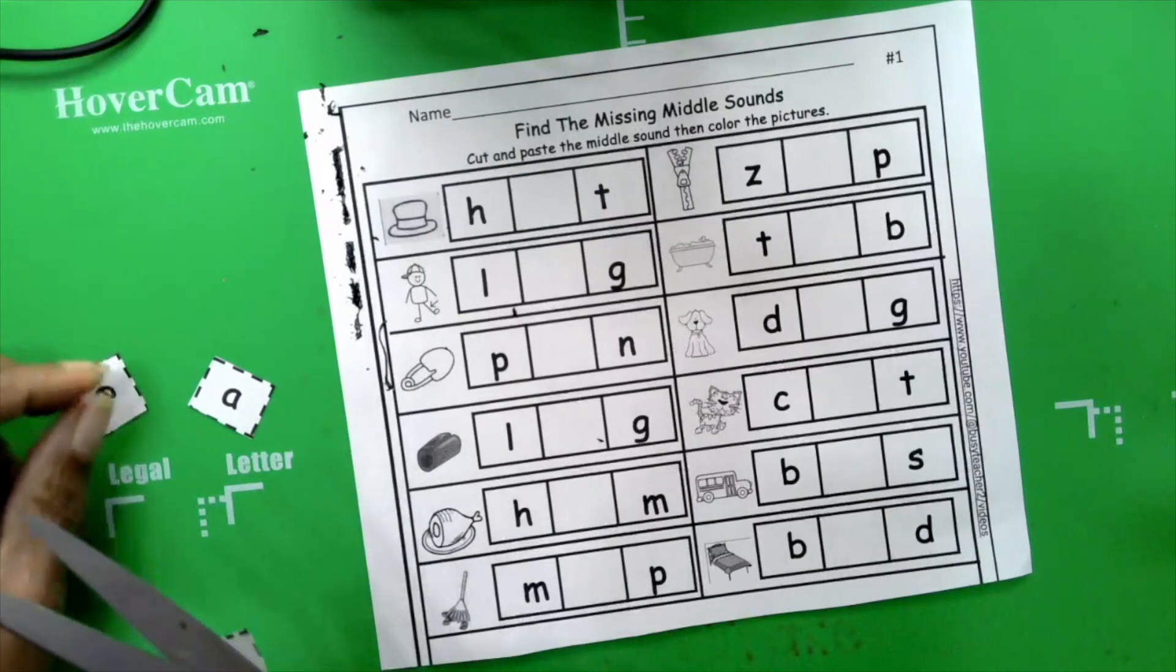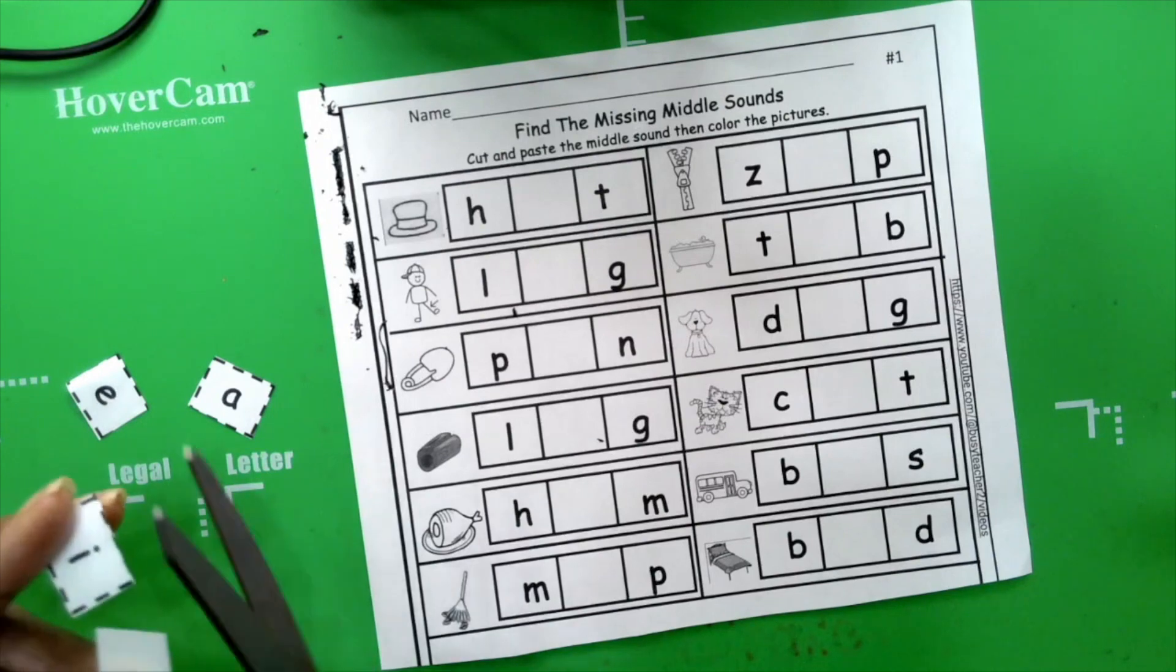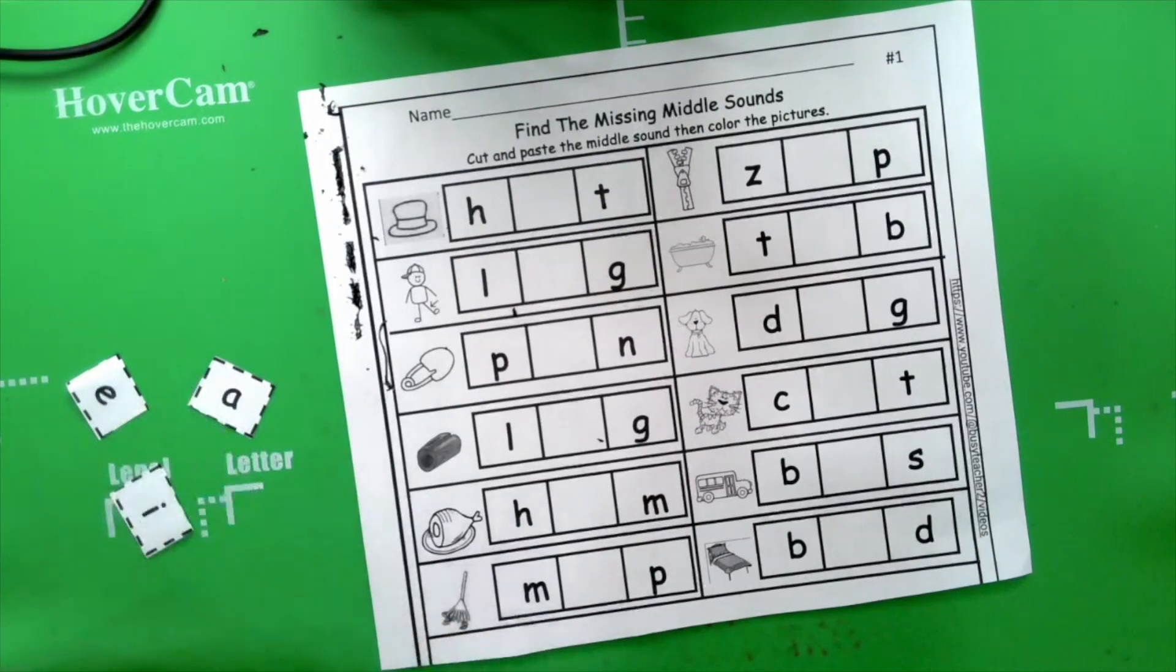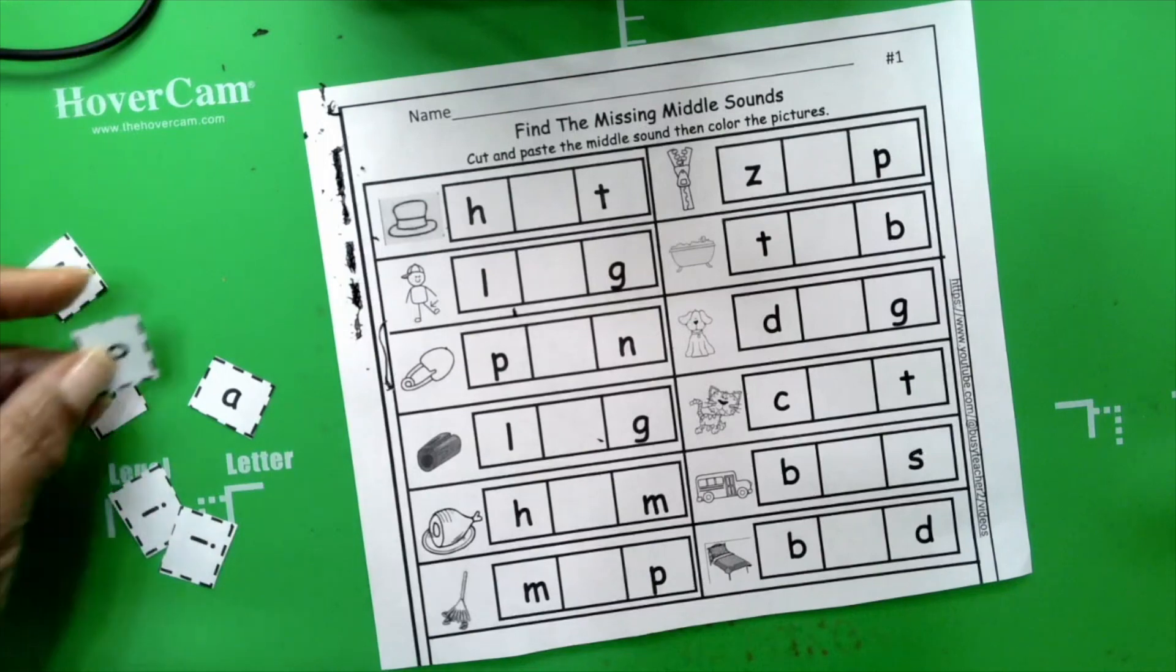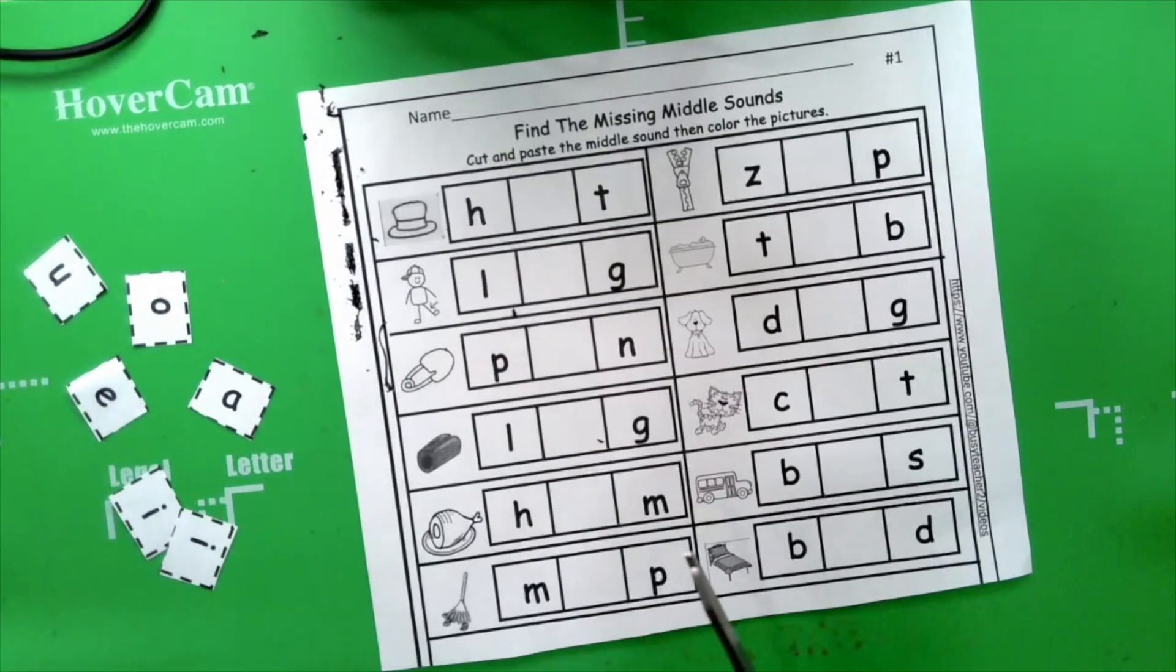What are the vowels again boys and girls? A-E-I-O-U are vowels. And what do vowels help us do? It helps us write our names and words. Exactly. It helps us write our names and words.